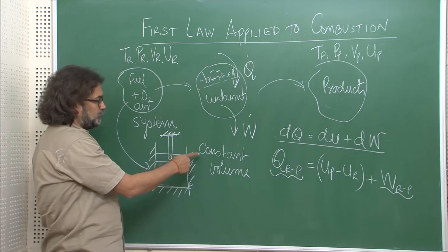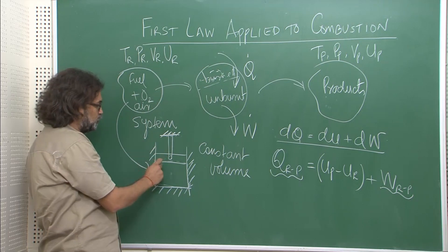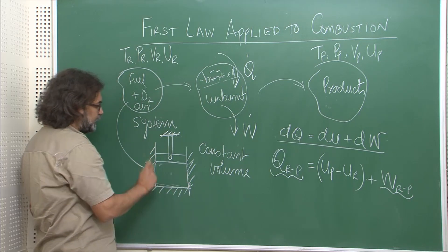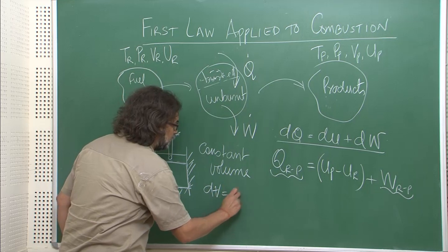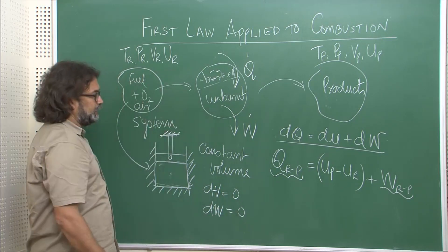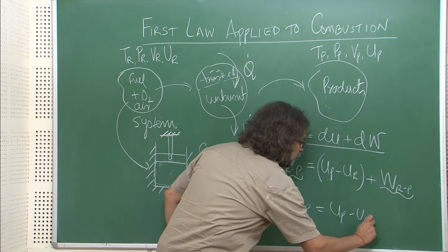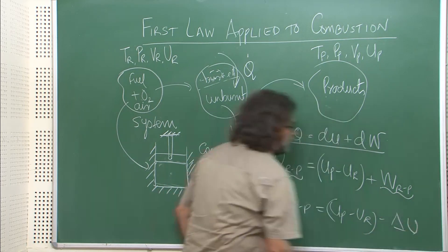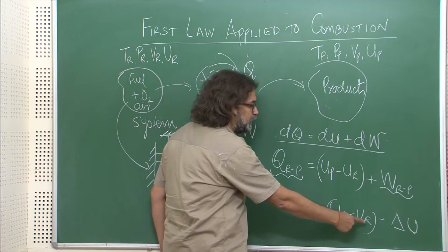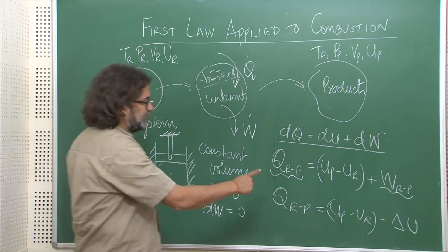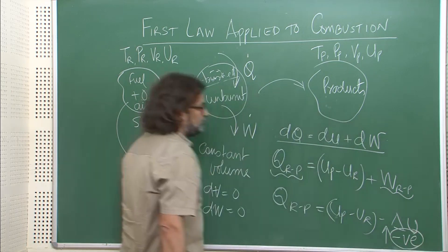Suppose the reaction takes place in a constant volume process — the piston is not allowed to move. Since dV = 0, dW = 0, and therefore Q(R to P) = Up − Ur, which we can write as ΔU. For a combustion reaction, the internal energy of the products is lower than the internal energy of the reactants, and therefore this ΔU will be a negative quantity for combustion reactions.